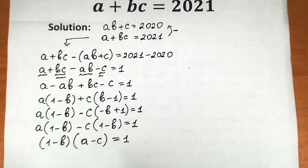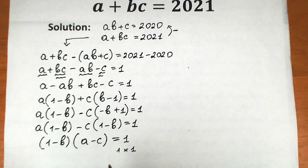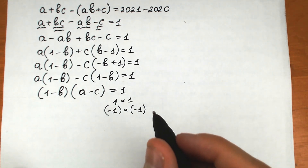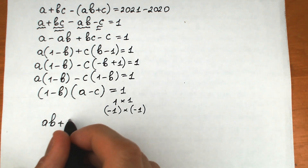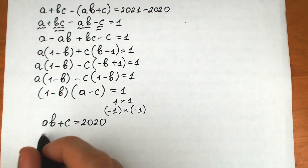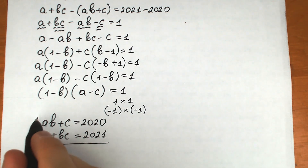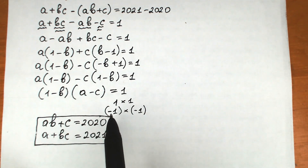So we've factored the expression as (1 minus b)(a minus c) equals one. We can express one as a product of two numbers in only two cases: one times one, or minus one times minus one. So we have two cases to consider.